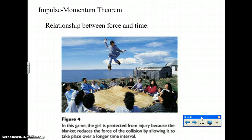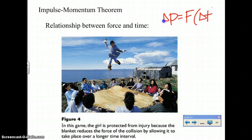What is staying constant is the momentum — your P is constant. So if you know momentum is staying constant, think about the impulse momentum theorem: delta P equals F times delta T. If your momentum is constant, what is the relationship between force and time? It's an indirect relationship — as one increases, the other decreases. So: force is reduced when the time interval of impact is increased.